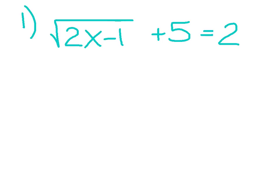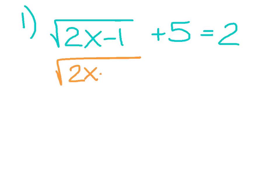Example number 1: the square root of the quantity 2x minus 1 plus 5 equals 2. So let's revisit those steps. Our first step is to isolate the radical — I need to get this piece by itself. So I need to move the 5 to the other side by subtracting 5. So the square root of 2x minus 1, subtract 5, that eliminates there, and I should get negative 3.